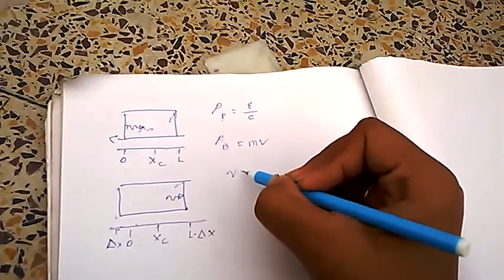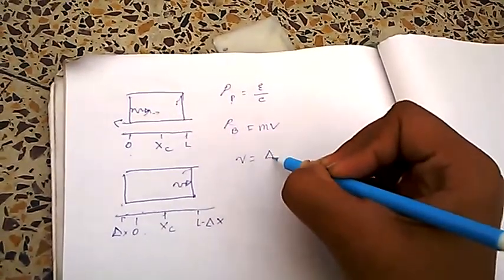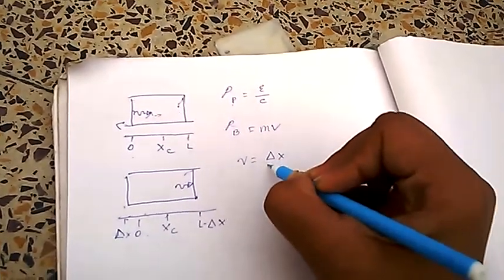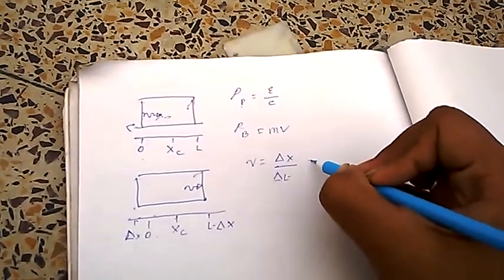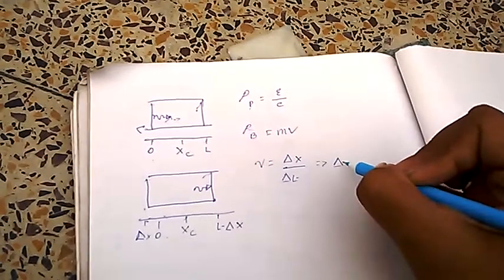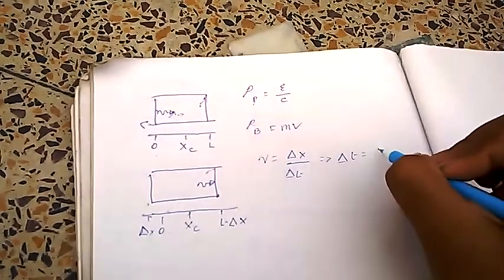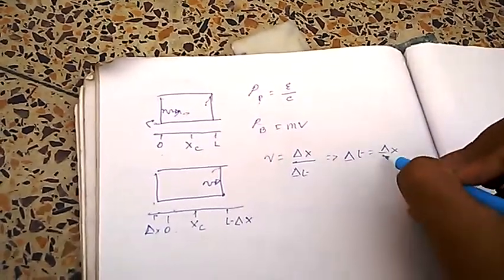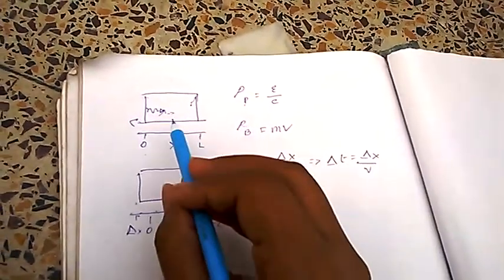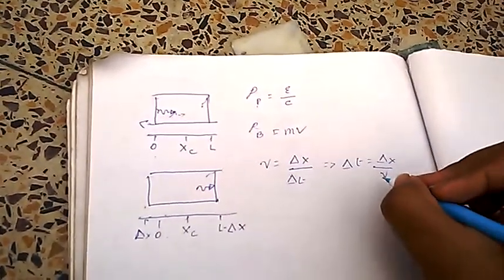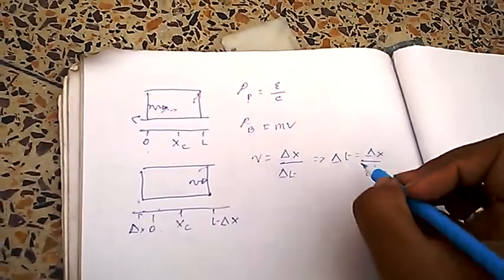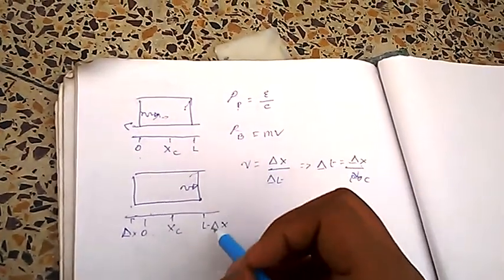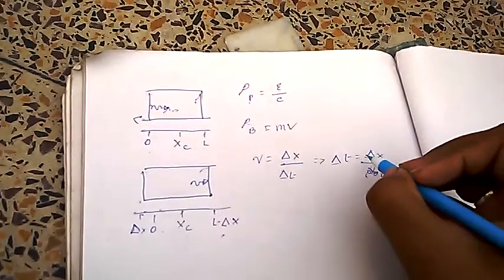Now, we also know that velocity equals to delta x, or change in distance, by change in time, which gives us change in time, which refers to change in distance by velocity. We know that velocity is now C, or speed of light, as photon travel to speed of light. And the distance is L minus delta x.